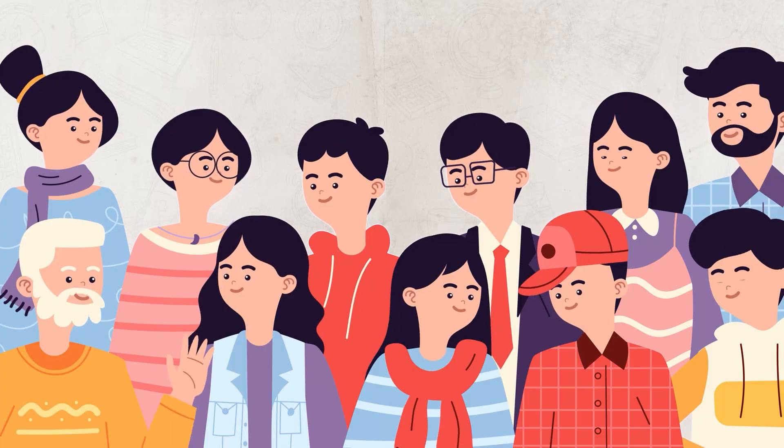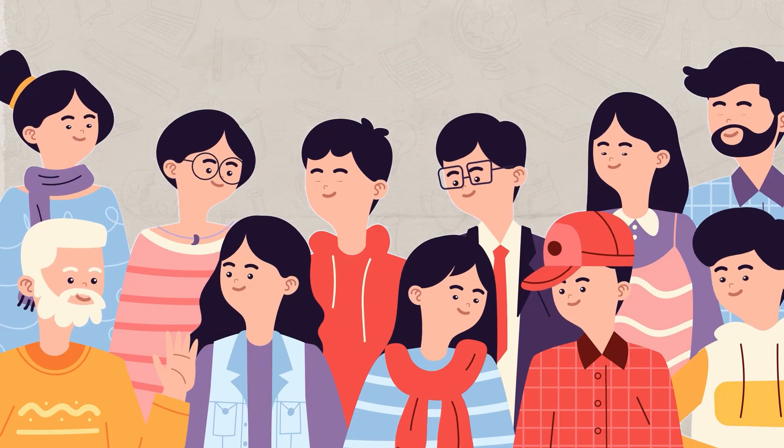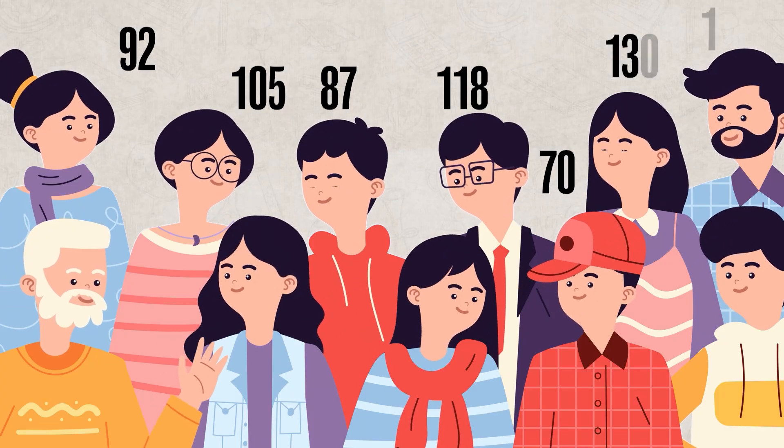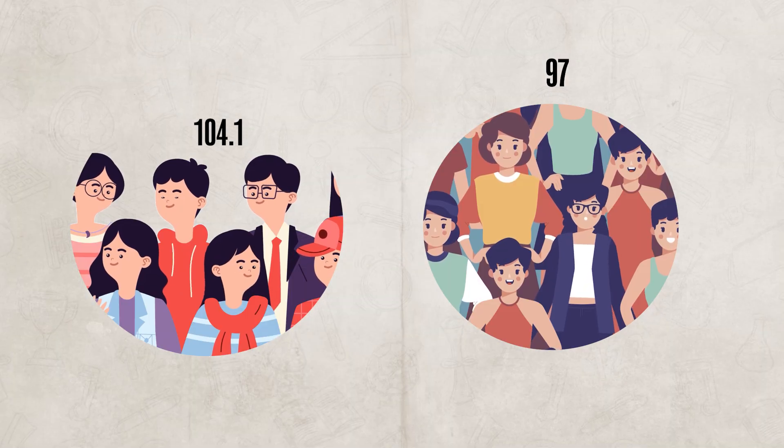Research has shown that there is a greater difference in IQ scores within a group than between groups. For example, if you take 100 randomly chosen students from the senior class at your school, you will see a wide range of IQ scores. This range within the group will most likely be larger than the average differences when comparing across different groups, such as other grades in your school. This means that individual differences within a group are more significant than average differences between groups, highlighting the importance of not making assumptions about a person's intelligence based solely on group identity.